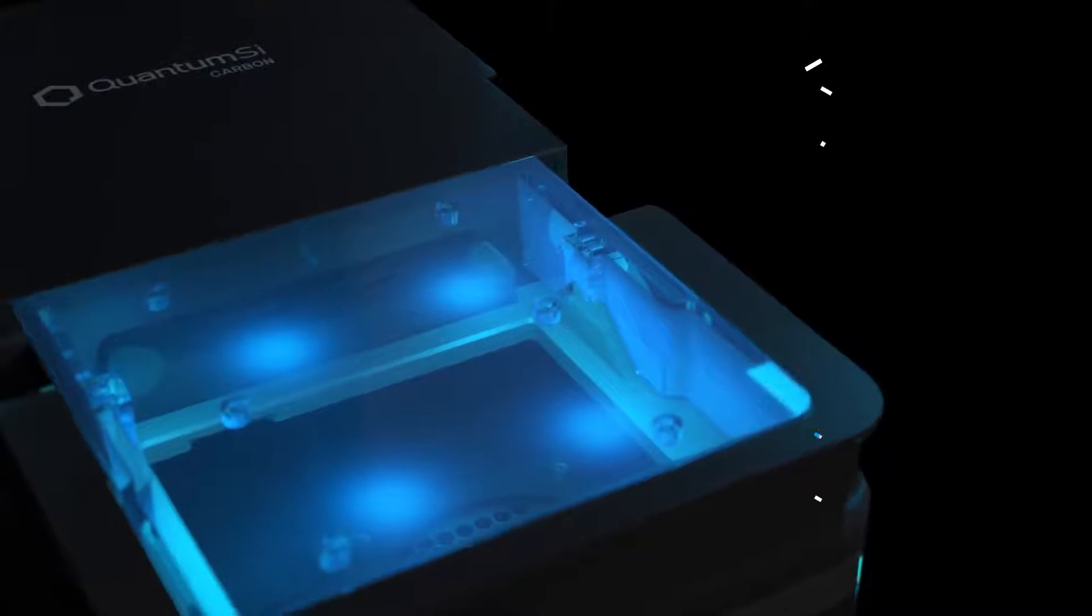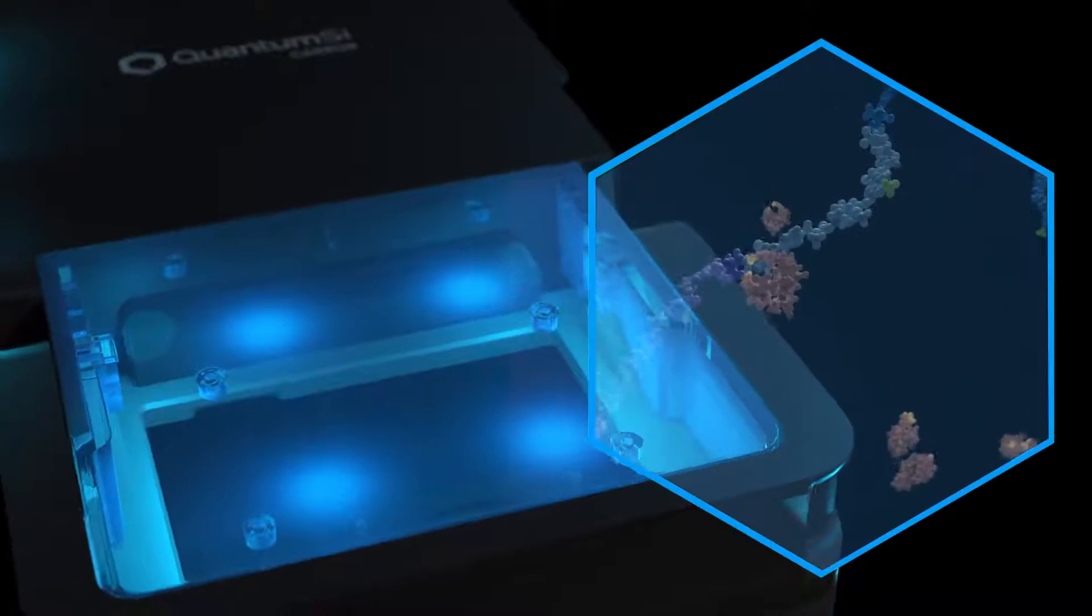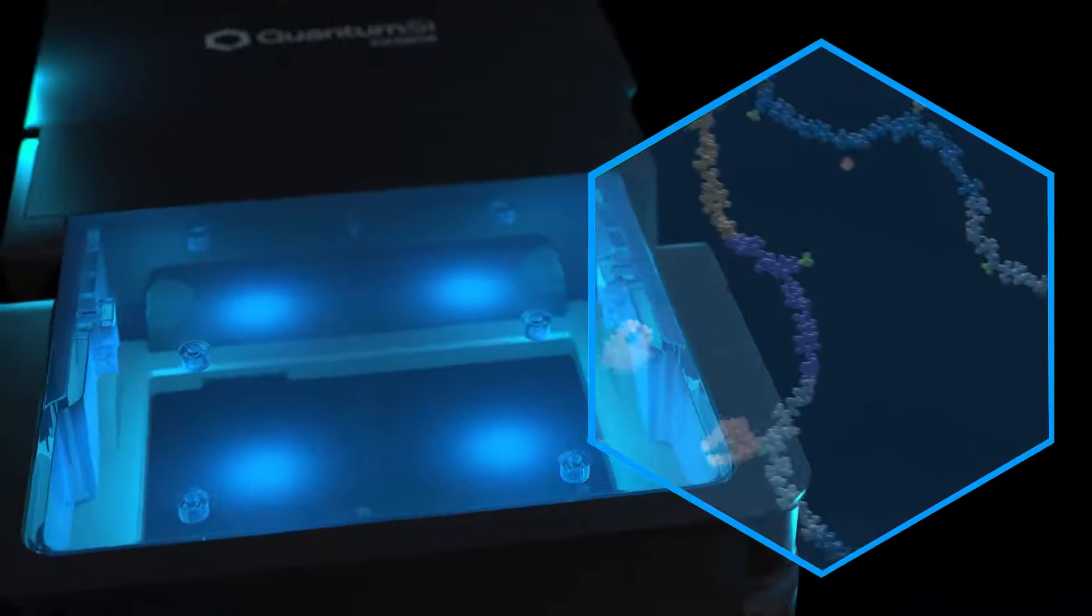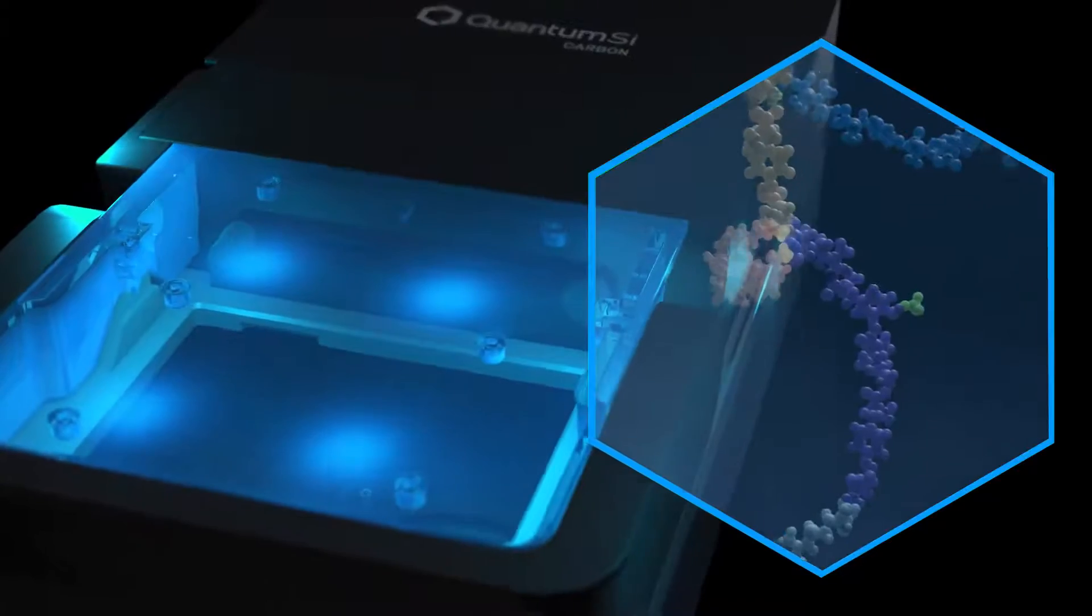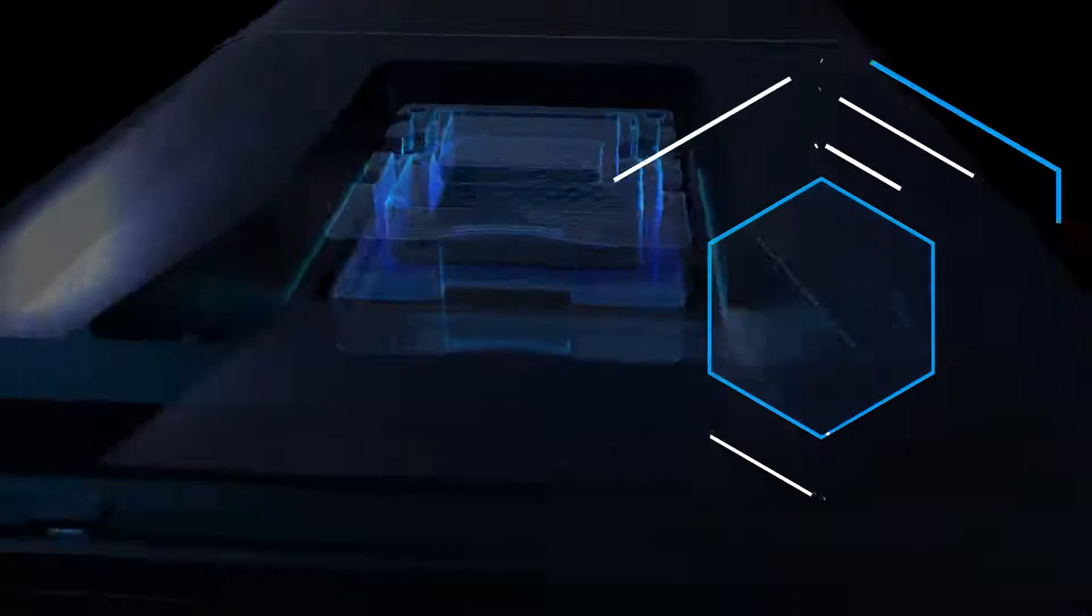Sample prep begins on Quantum SI's carbon instrument. We isolate proteins and digest them into peptides. Peptides are distributed into individual wells on our chip which is loaded onto Quantum SI's platinum sequencing instrument.